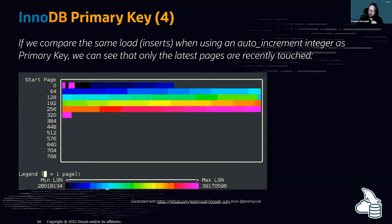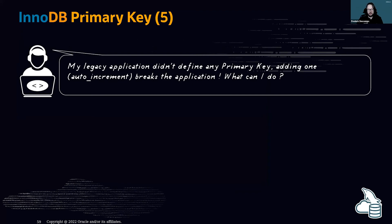When you use a sequential primary key like an auto-increment integer, only the latest pages are touched. This is why it is very important for performance to use a sequential primary key. But what if your legacy application didn't define any primary key?